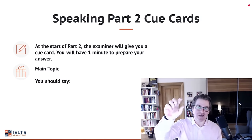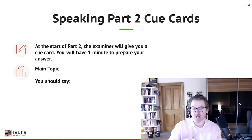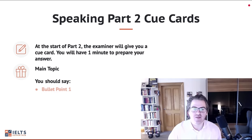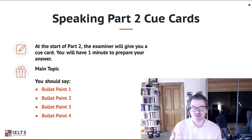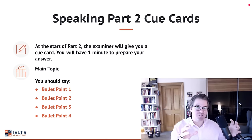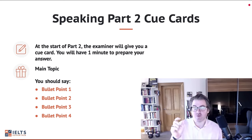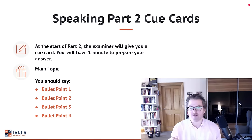The examiner will stop you when you get to around two minutes. At the top of every cue card there is going to be a main topic — this never changes. Then it says 'You should say' — again, this never changes. And then there will be four bullet points, which also never change. This is a little gift to us, because if parts of the IELTS test never change, we can give the examiners exactly what they're looking for, since it's very predictable. We can come up with a predictable solution.